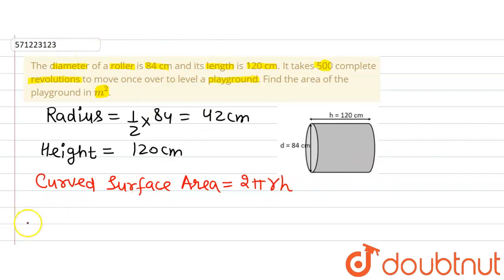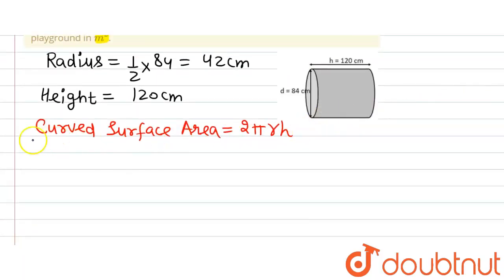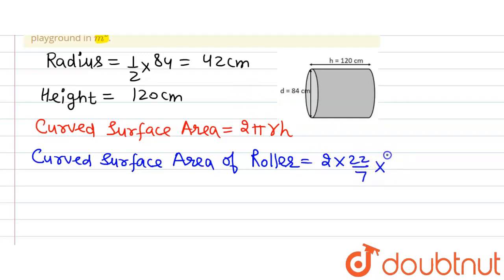Putting in the values of radius and h, we will get the curved surface area of the roller equal to 2 multiplied by π, which is 22 divided by 7, multiplied by radius 42 cm, multiplied by height 120 cm.